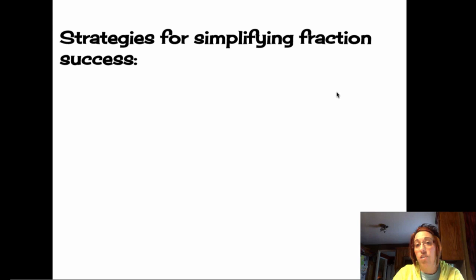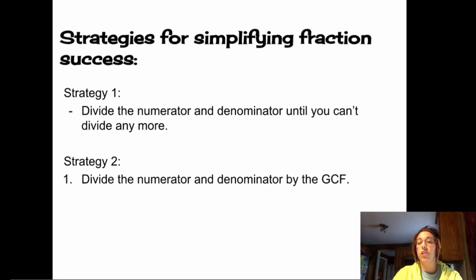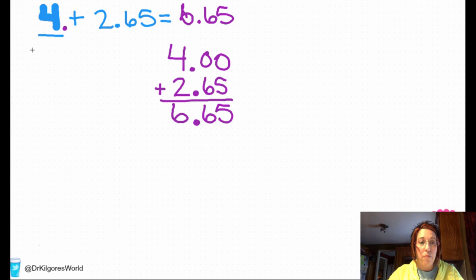Today I have two separate strategies that you can use, that you can choose to use. Neither is better than the other one. The second one is like your one-stop shop, but the first one works as well. So strategy number one, you're going to divide the numerator and denominator by the same number until you can't divide any more. Or strategy number two, you're going to divide the numerator and denominator by the greatest common factor.